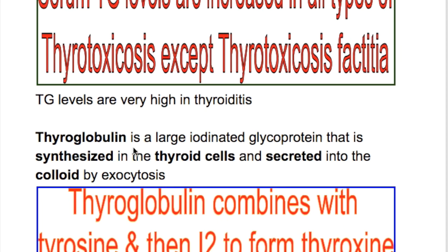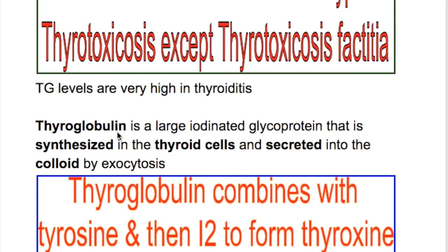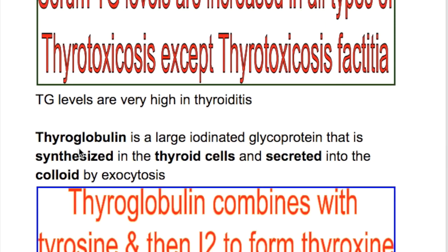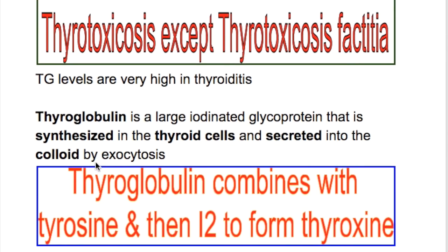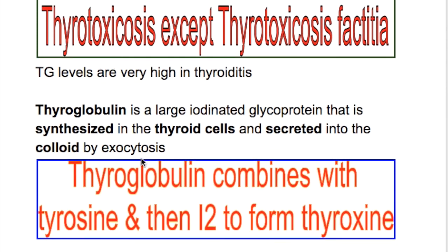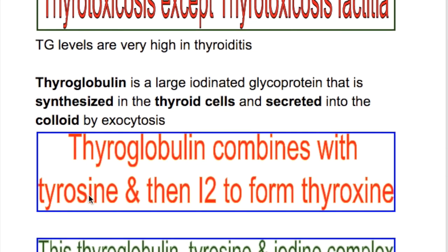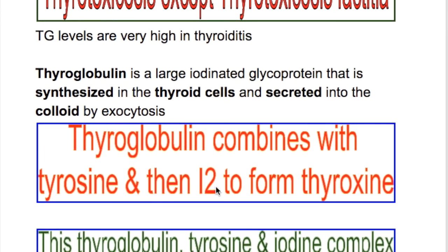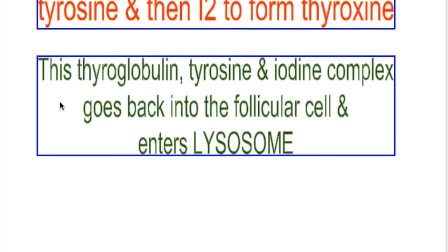Thyroglobulin is a large iodinated glycoprotein synthesized and secreted by the follicular cell. Thyroglobulin is secreted into the colloid by exocytosis. It combines with tyrosine inside the follicle and then with iodine to form thyroxine.